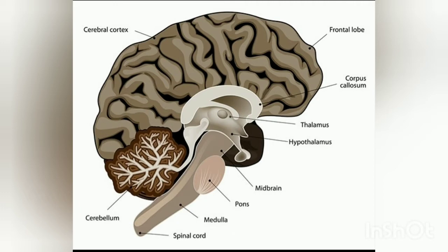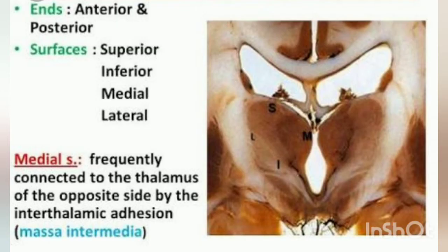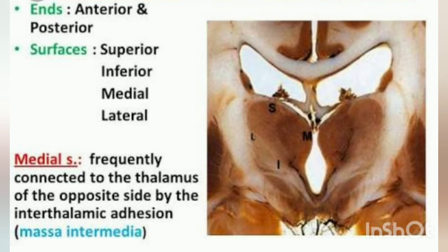Moving on to the external features of the thalamus. The thalamus has two ends: anterior end and posterior end. The anterior end contains the anterior nucleus; it is narrow and forms the posterior boundary of the interventricular foramen, which connects the third ventricle and the lateral ventricle. The posterior end is expanded and is known as the pulvinar.